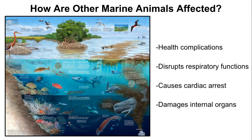How are other marine animals affected? Oil causes serious health complications for marine life. Exposure disrupts their respiratory functions and causes reproduction defects. When fish intake oil through their gills, it affects the liver, heart, and respiratory rate, causing fatal cardiac arrest. When oil naturally disperses into the water column, small marine creatures like shellfish and shrimps, which cannot swim away, become endangered.